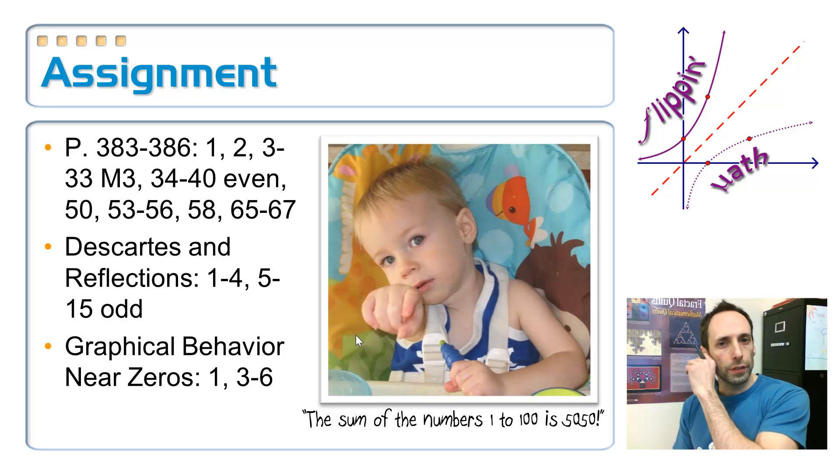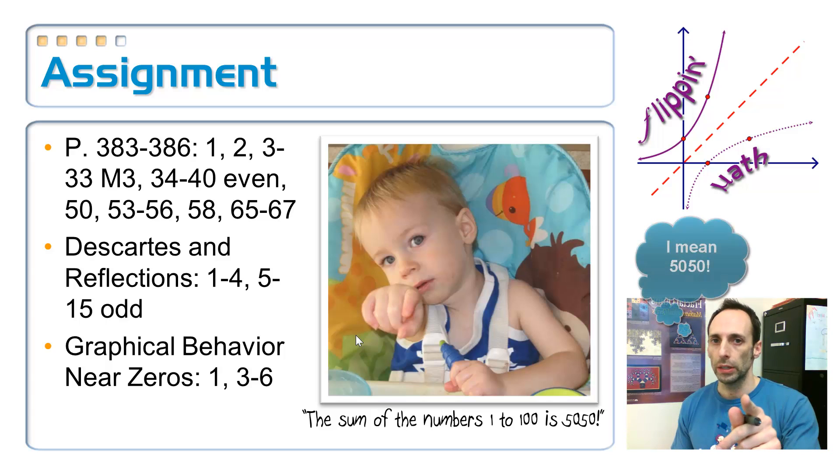All right, so here's your assignment. Notice that there are two sets of, two worksheets. Get those both printed out for me. And look at Rowan right there. Little Gauss. He added up the numbers from 1 to 100. He got 5050, and he's right. That's the correct answer. All right, see you guys in class.